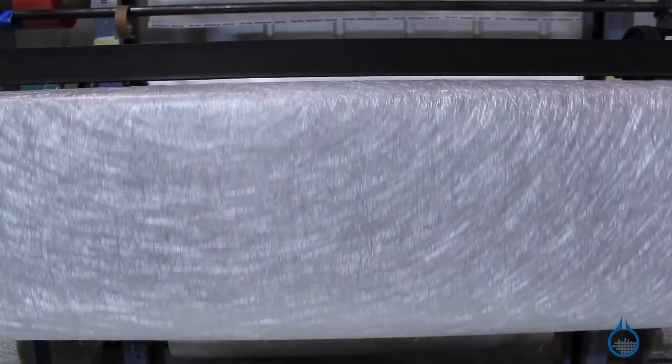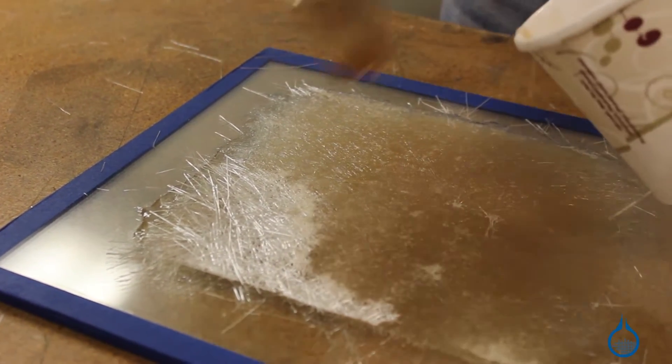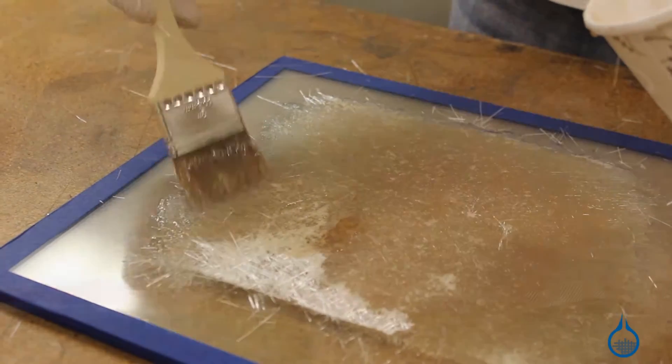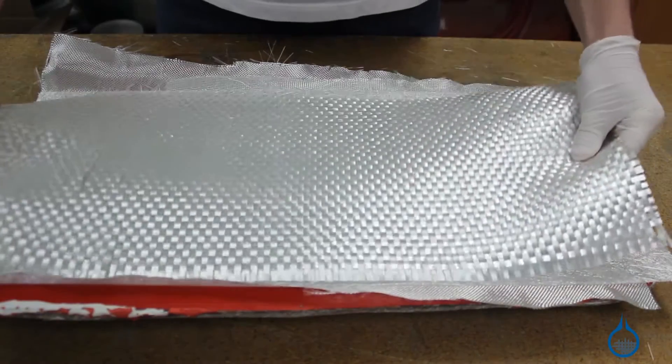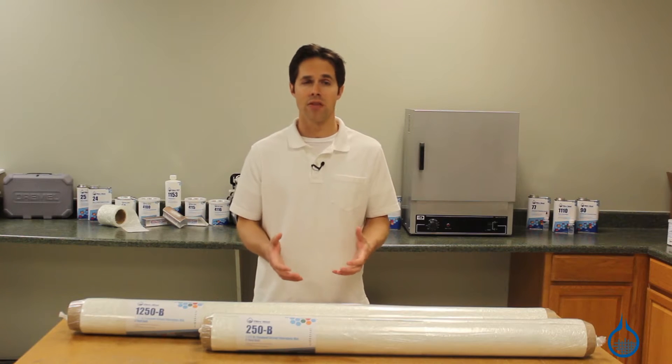Chopped Strand Mat is most commonly used with polyester resin to quickly build thickness for composite parts. It's also used with fiberglass fabrics or woven roving to build molds or create larger fabrications. Chopped Strand Mat has a light binder that holds it together.